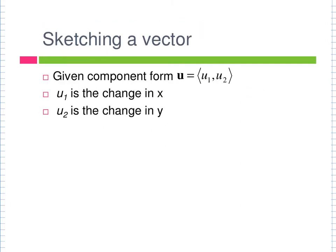When sketching a vector, the first term in component form is the change in x and the second is the change in y. If you're given both initial and terminal, plot them and connect. If no initial point is given, assume your initial is (0, 0) and use the component form values as your stopping point. A vector can float around a coordinate plane and still exist as the same vector, because the change in x, change in y, and magnitude remain the same.